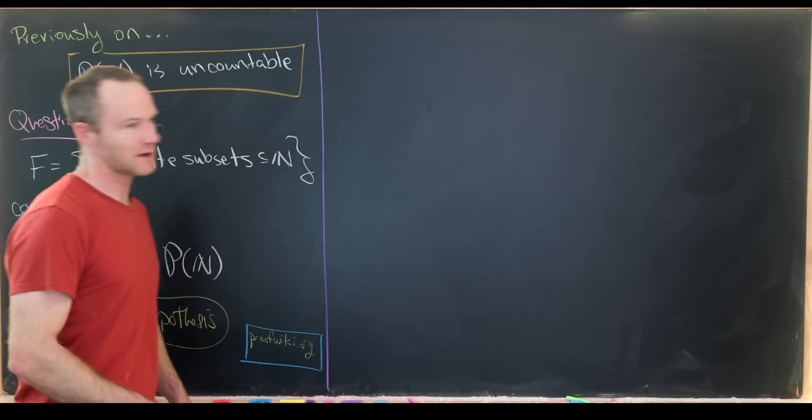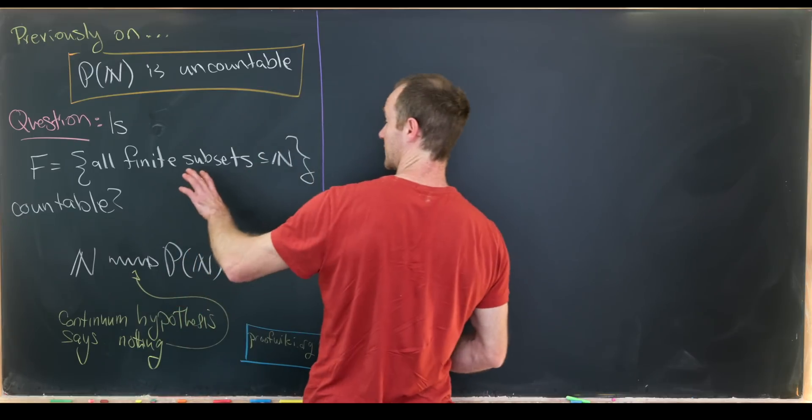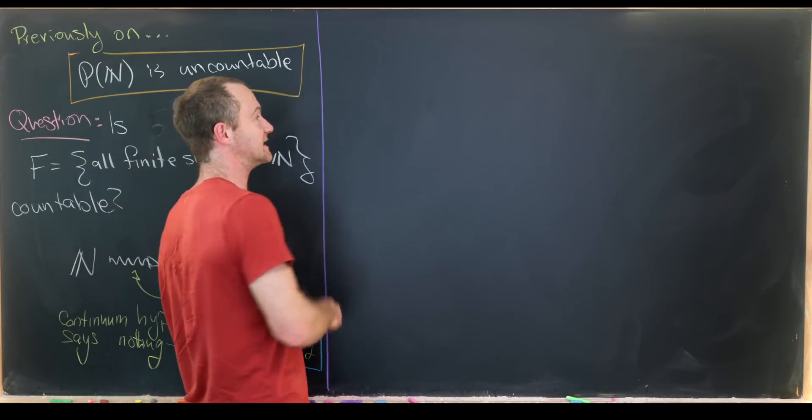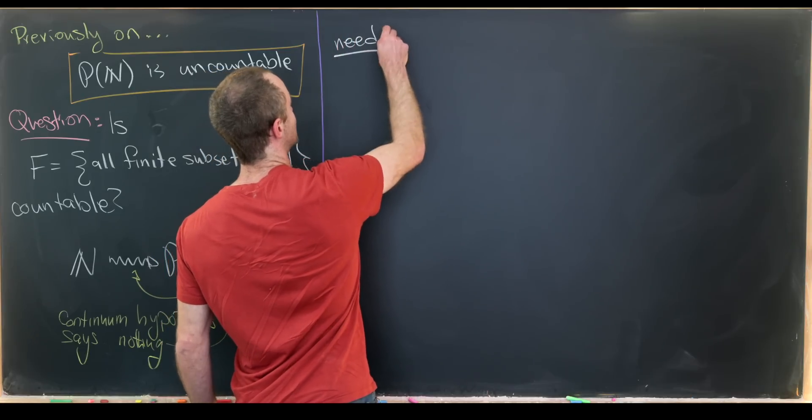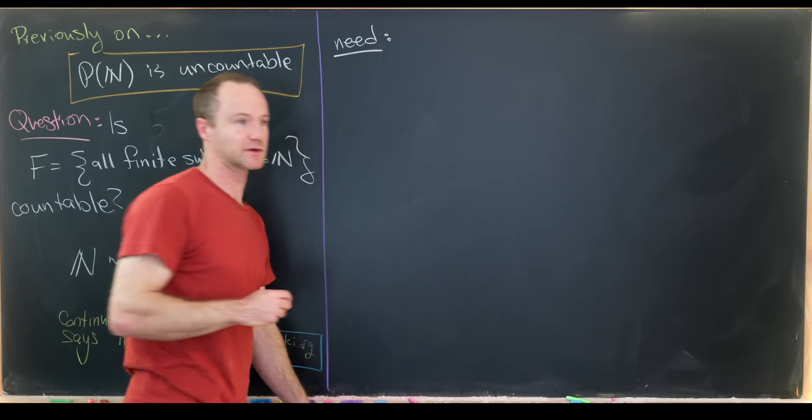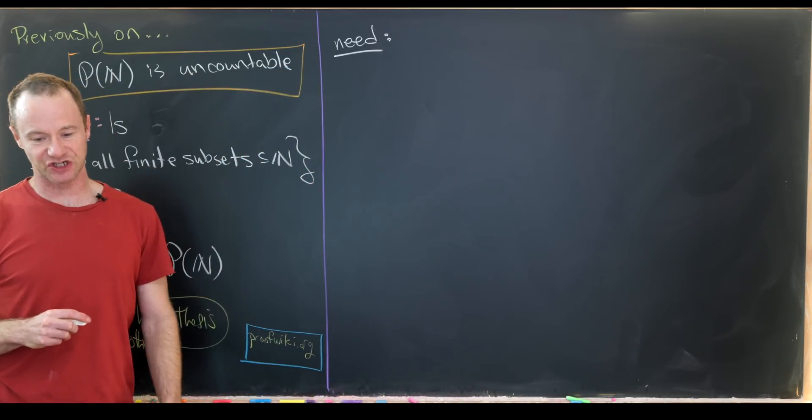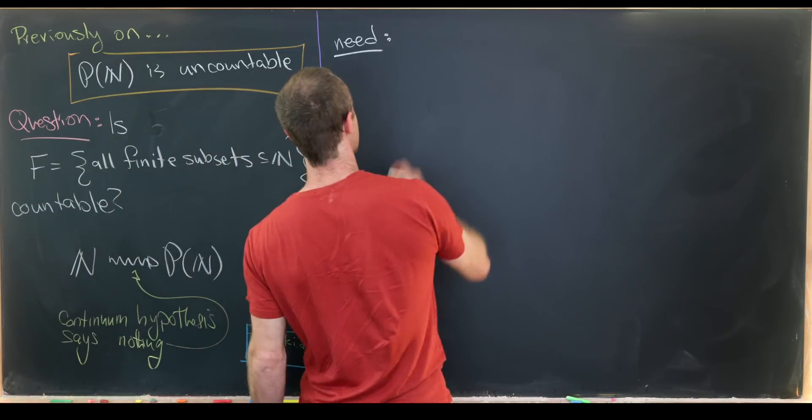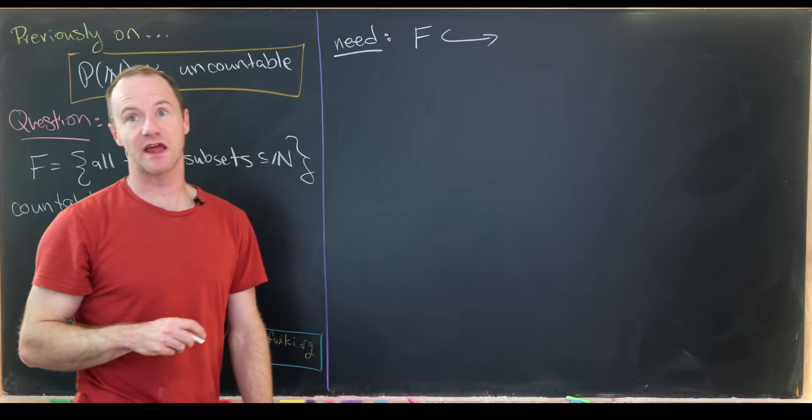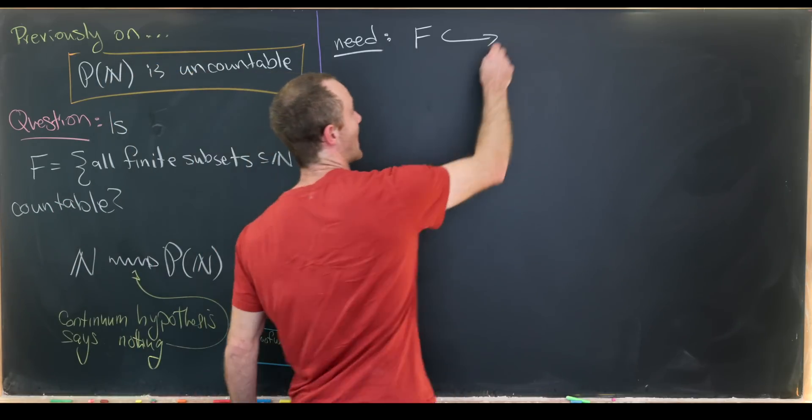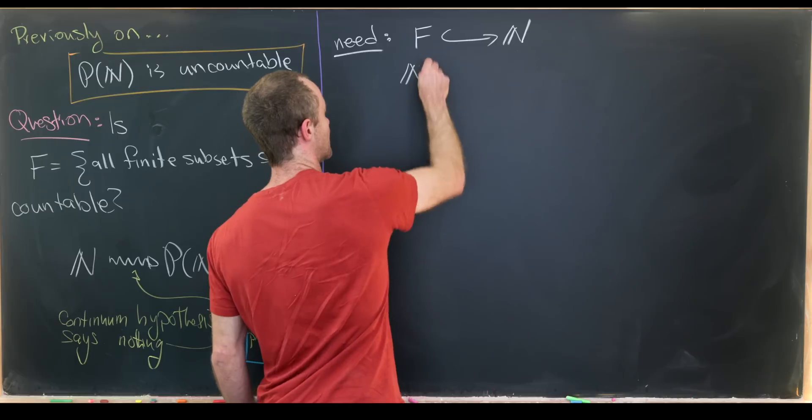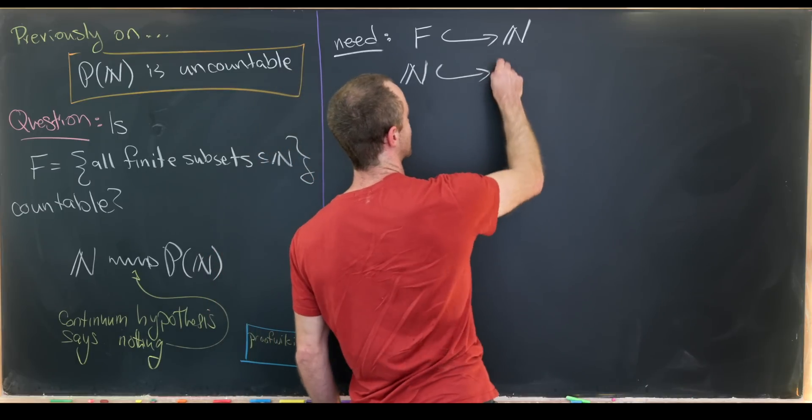So let's see how we can do this. We'll end up showing that yes, it is countable. Thus, what we need is a bijection from this set F into the set of natural numbers. But finding a bijection is pretty difficult. So what we'll do instead is find an injection - a one-to-one map from F to N. And then we'll find a one-to-one map from N to F.